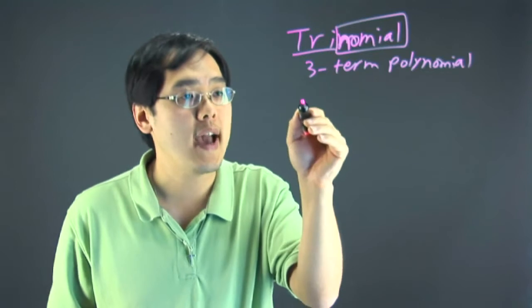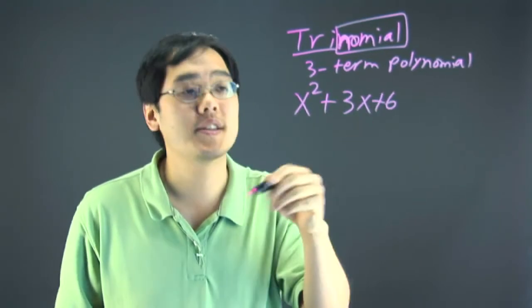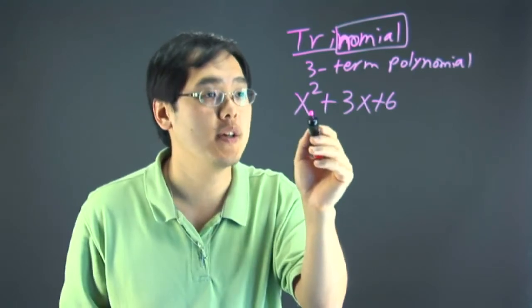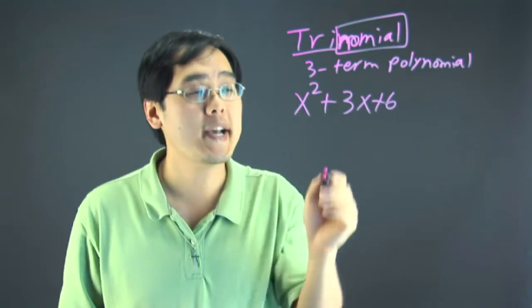So, in other words, you have x squared plus 3x plus 6. This is an example of a trinomial because it's a polynomial and all the terms are of distinct exponents and powers.